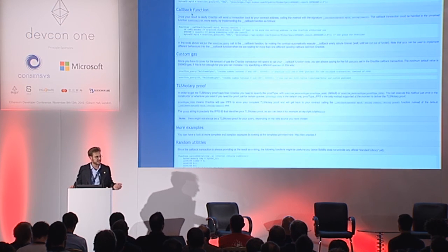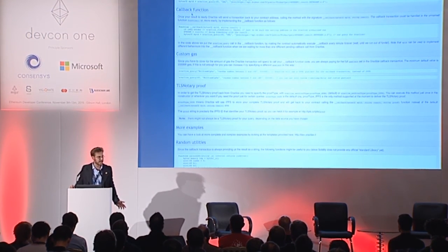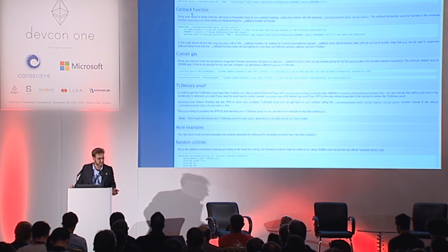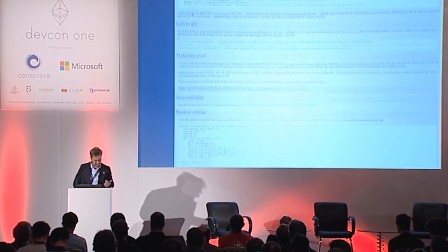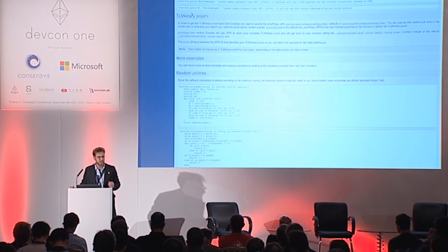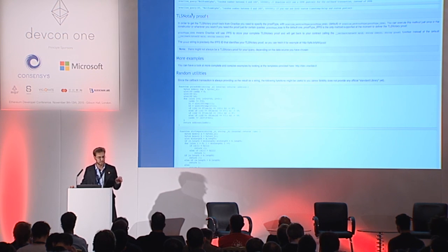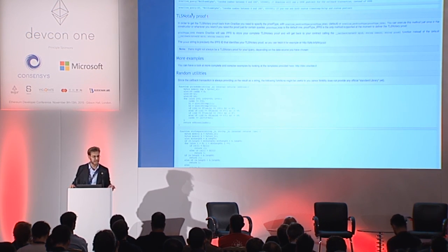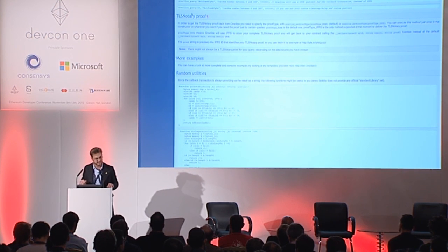You can write in just 10 lines something like a data feed which is always keeping updated the price of Ether, taking the price from Kraken or things like that. There are some utilities you can use because we are sending back data as a string. We have some JSON and XML helpers so you can fetch specific fields if you don't need the full response from the API. There are also helpers for string comparisons, string concatenation, and all that kind of stuff.